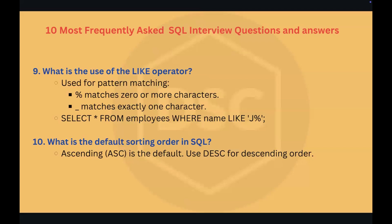Question number ten: what is the default sorting order in SQL? The default sorting order in SQL is ascending. If you use ORDER BY without specifying anything, SQL will sort in ascending order by default. If you want descending order, you need to use DESC in the ORDER BY clause.